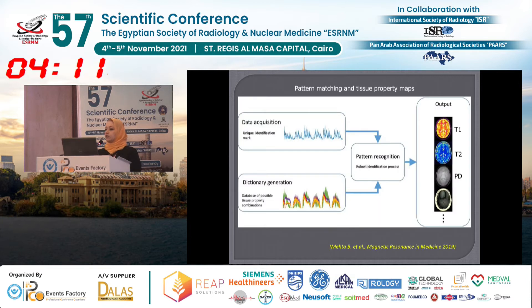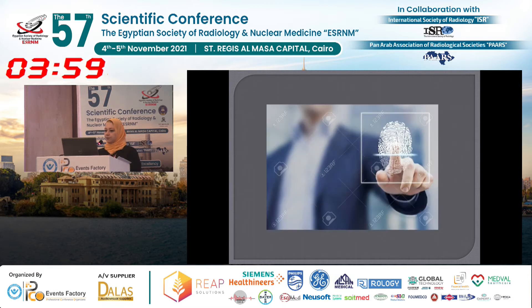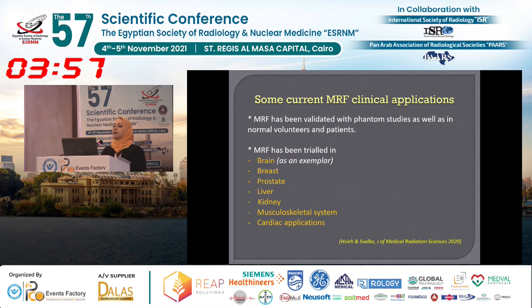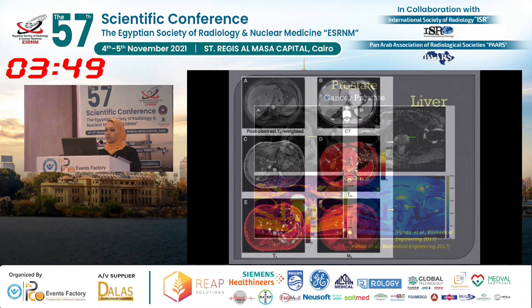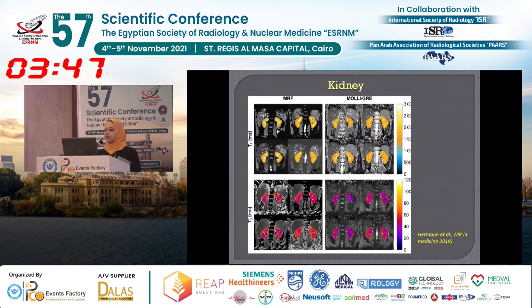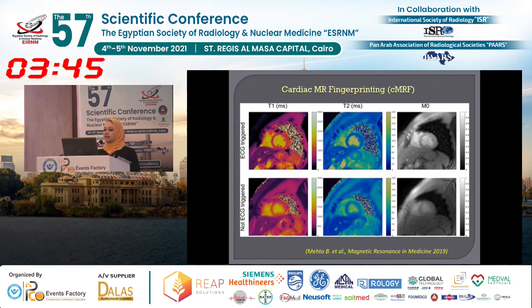This procedure is repeated for each voxel in order to obtain the property maps, as shown in this figure. MRF has been applied to organs such as the brain — which is our example today — the breast, prostate, liver, kidney, musculoskeletal system, and cardiac MRF.